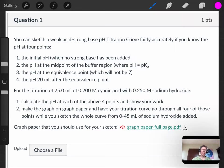You can sketch a weak acid strong base pH titration curve fairly accurately if you know the pH at four points: the initial pH when no strong base has been added, the pH at the midpoint of the buffer region where pH equals pKa, the pH at the equivalence point which will not be 7, and the pH 20 milliliters after the equivalence point. For this particular problem, for the titration of 25.0 milliliters of 0.200 molar cyanic acid, you're going to be titrating with 0.250 molar sodium hydroxide.